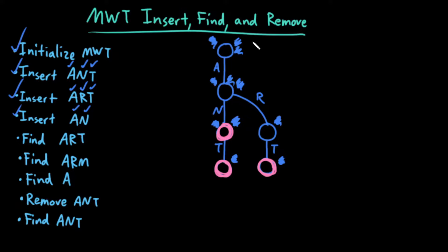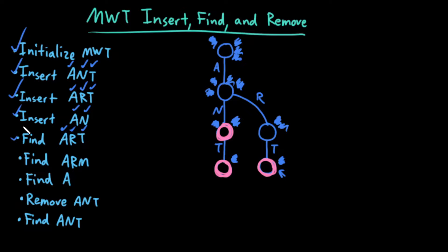Start at the root node, start at the first letter. Does my current node have a child edge labeled by my current letter? Yes, it does. So I traverse down. Does my current node have a child edge labeled by the current letter? Yes, it does — R, here's the child edge. So I traverse down. I've finished my word. I check: is my current node a word node? Yes, it is. Therefore, success — ART does exist in this multi-way trie. So that was a successful find.